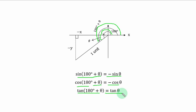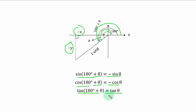Note that in the third quadrant only tangent is positive — this is because the opposite divided by the adjacent gives a negative over a negative, which yields a positive result. That is why tangent is positive in the third quadrant.